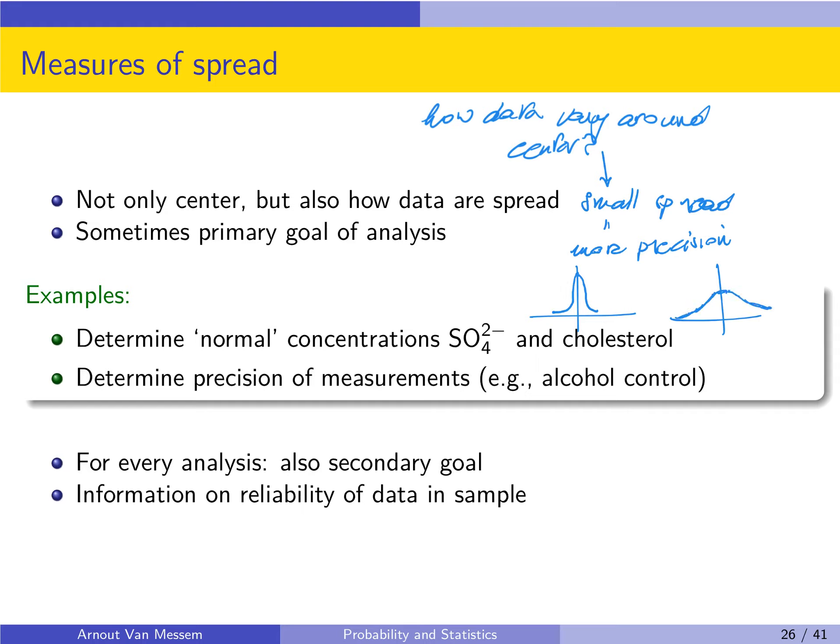For the right distribution the top is lower because for each distribution the area below the curve is always equal to 1. So if the spread is wider it means that we have more data on the outside, and because the area under the curve is always equal to 1, it means that the top of the right plot cannot be as high as the top in the left plot.